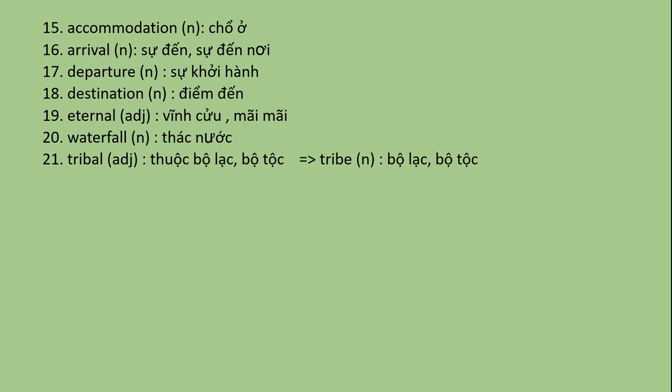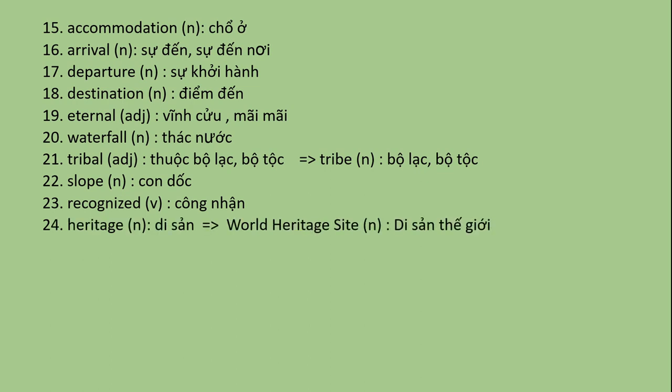Number twenty-one: Tribal - là tính từ, có nghĩa là thuộc về bộ lạc, bộ tộc. Như vậy, cô sẽ có một danh từ là Tribe - Bộ lạc, bộ tộc. Tiếp theo: Slope - Con dốc. Recognize - Công nhận. Heritage - Di sản. Chúng ta sẽ có cụm từ trong bài là World Heritage Site - Di sản thế giới. Cave - Hang, Động.